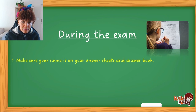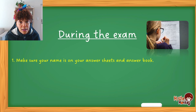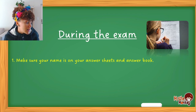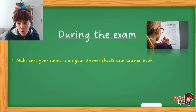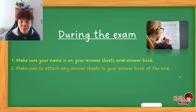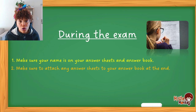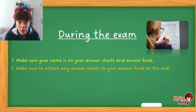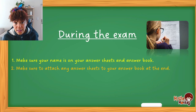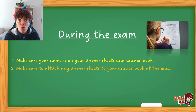A couple more things during the exam: make sure your name is on your answer sheets and answer book. You won't believe how many people have lost marks because they don't write their names — if papers fall and answer sheets come loose from the answer book, they won't know whose is whose. Also, attach your answer sheet with a stapler to your answer book. If the question paper came with an x and y axis for drawing a graph, attach that to make sure it gets to the marker in one place.